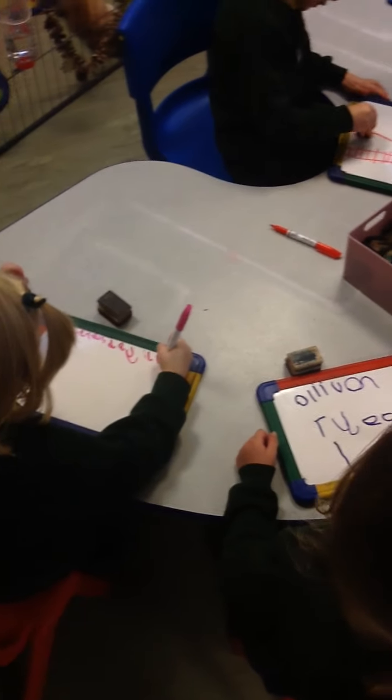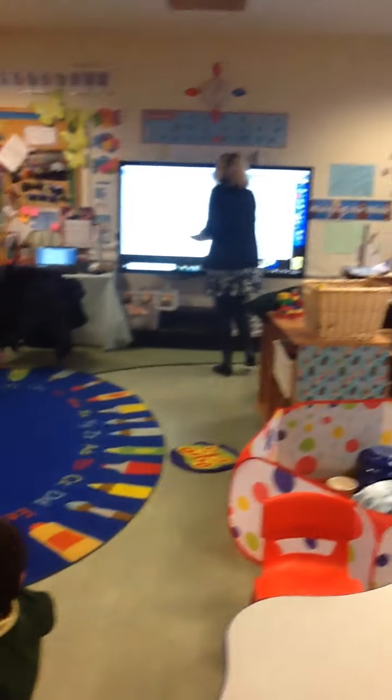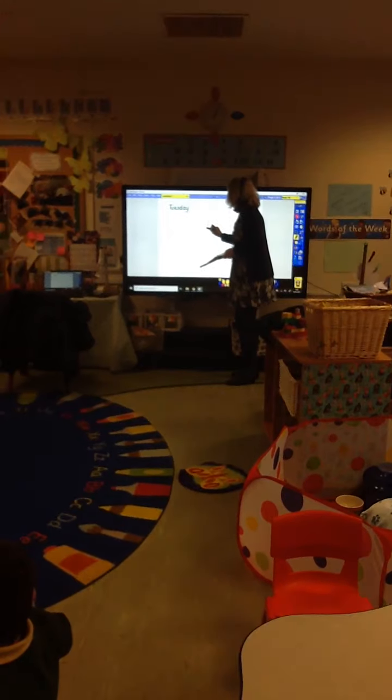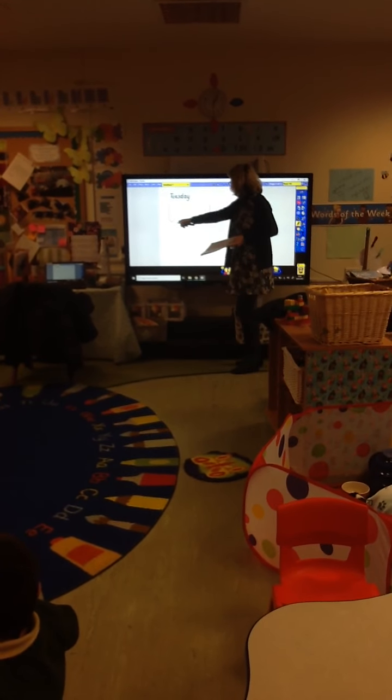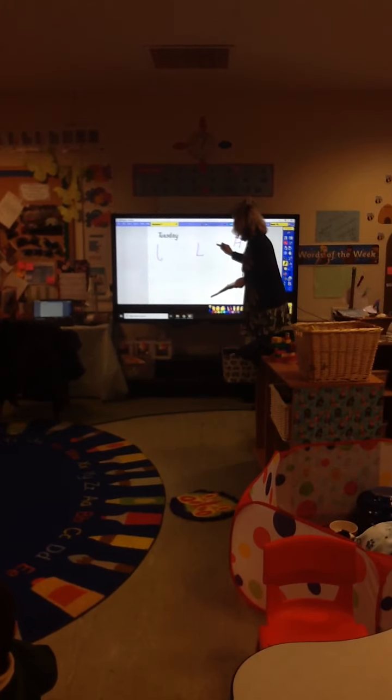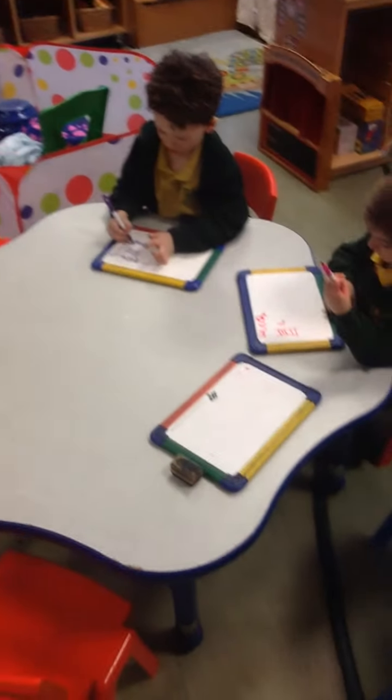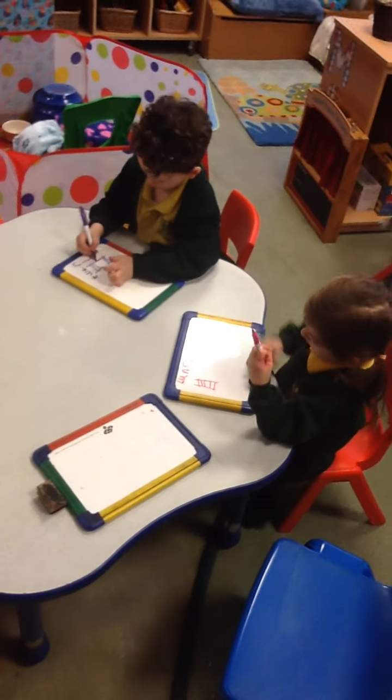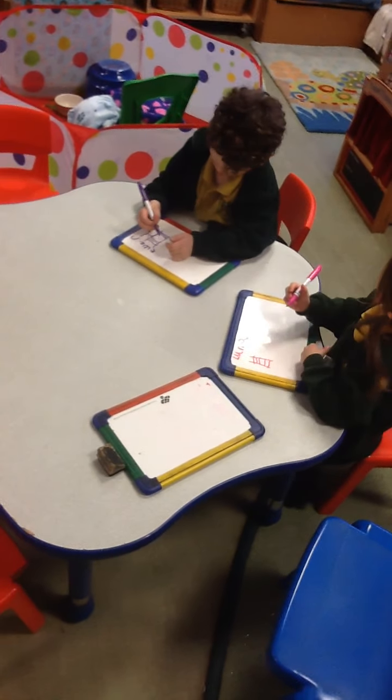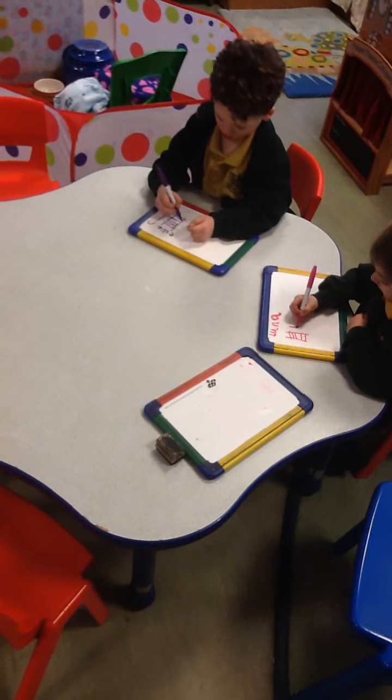Let's do capital now for Luna and Leo because we're very good, aren't we, at doing our lowercase, our smaller ones. Start at the top, come down and go across. That's the capital. That's all my name. Yeah. Names and starts of sentences.